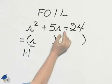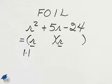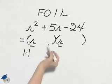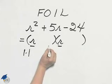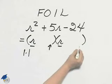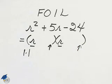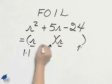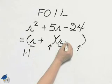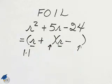Looking now at the sign — that negative 24 — 24 came from the last term, and that came from multiplying what was in this last place and this last place. Two entries: if they multiply to be a negative, one will be positive and the other negative.